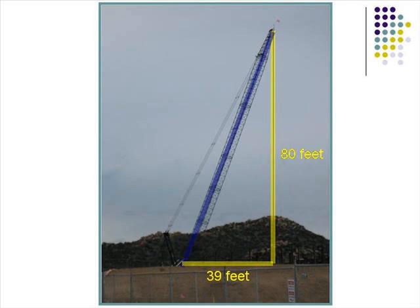Let's use the Pythagorean Theorem to find the length of the crane. If A squared plus B squared equals C squared, where C is the hypotenuse, we can find the length of the crane when we solve for C.